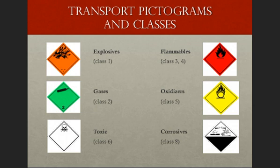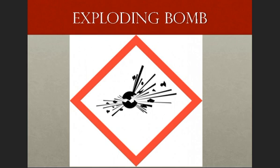We will now examine each of the hazard communication GHS pictograms individually. The exploding bomb pictogram is presented on screen and represents the following chemical hazards: explosives, self-reactives, and organic peroxides. Methyl ethyl ketone peroxide and nitroglycerin are two examples of chemicals that may require the exploding bomb pictogram.